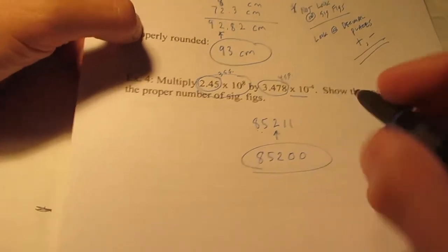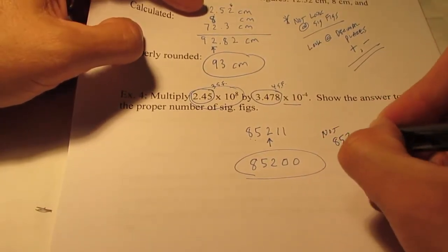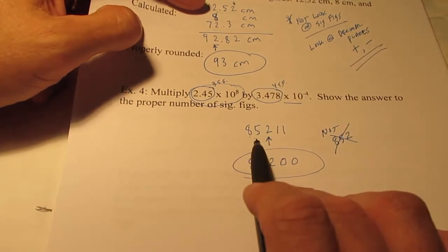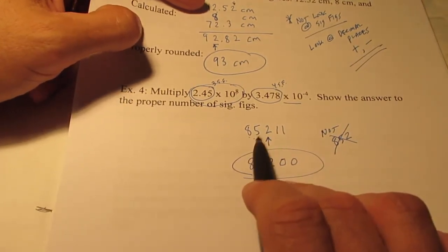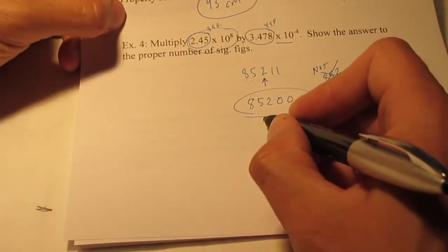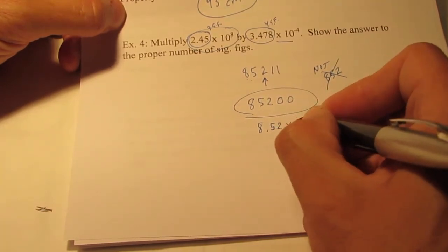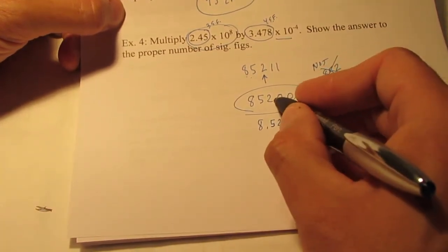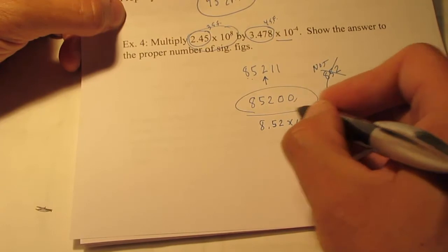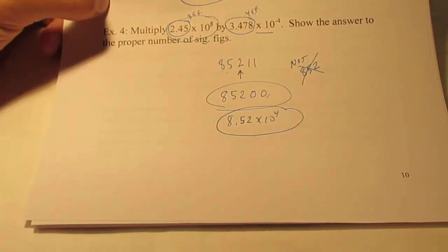Not 852. Not, and a lot of kids will do this. Obviously, 85,211 rounded off is not 852. That's 85,200. Now I'd feel more comfortable if we put 8.52 times 10 to the 4th. Either one of those answers would be correct.